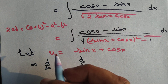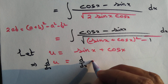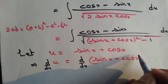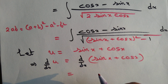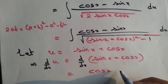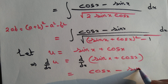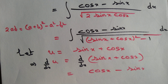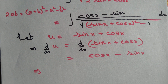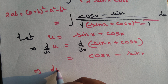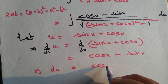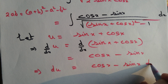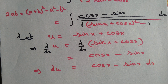Let u equal to sin x plus cos x. Then differentiating both sides: du/dx equals d/dx of (sin x + cos x), which gives cos x minus sin x. So cos x minus sin x dx is simply du. This method is called integration by substitution, and we substitute cos x minus sin x dx as du.